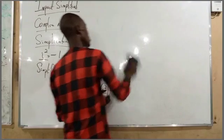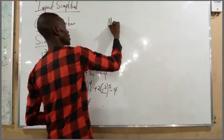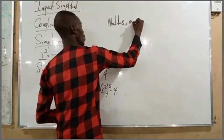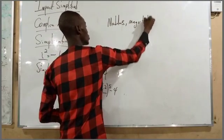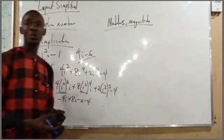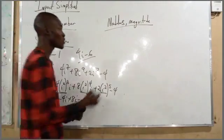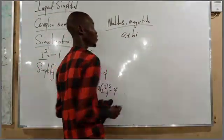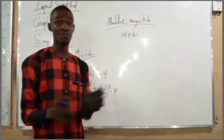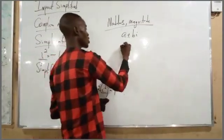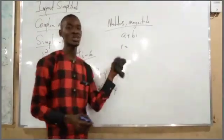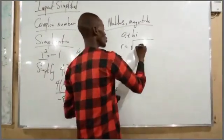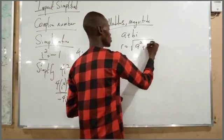To take it a step higher, we need to understand the modulus or magnitude of a complex number. The standard form is a plus bi. The modulus is denoted as R, and the formula is R equals the square root of a squared plus b squared.